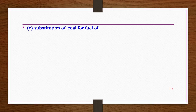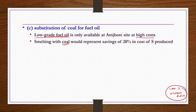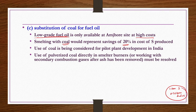Substitution of coal for fuel oil is another engineering problem. Fuel oil is expensive — 0.76 tons are needed per ton of elemental sulphur produced. In India, low-grade fuel oil is available only at one site at high cost. It has been found that replacing fuel oil with coal gives a 20% saving in the cost of sulphur production, so research is ongoing to implement this substitution.